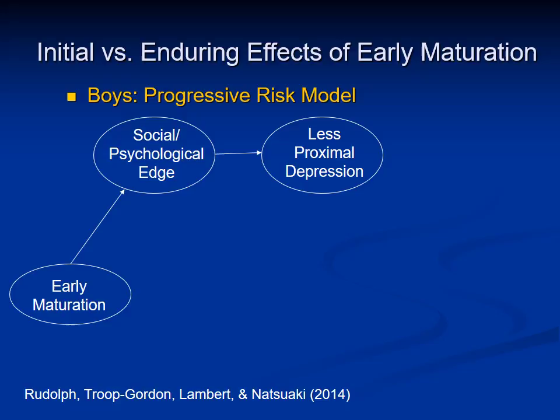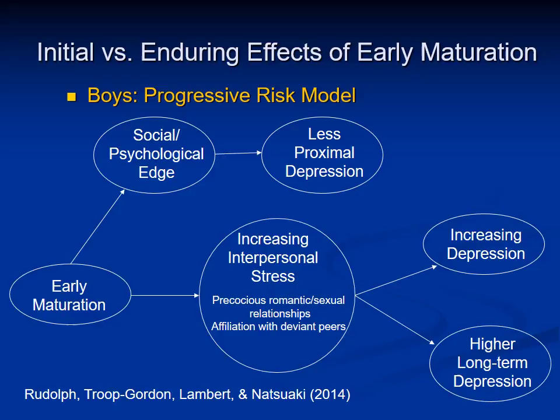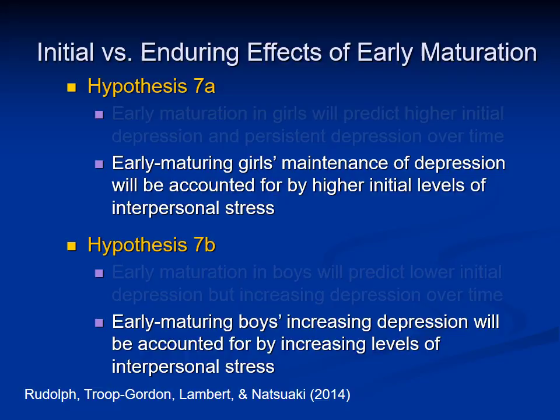In contrast, we thought boys might follow more of a progressive risk model. Early maturation in boys may provide an initial edge — they develop desirable characteristics which might give them more confidence and social stature — but the risk might accumulate over time. Early maturing boys also begin to affiliate with deviant peers and engage in more precocious romantic and sexual relationships. These experiences might create more stress in their relationships, and boys might suffer longer-term consequences associated with affiliating with risky peers. So we predicted that early maturing girls' maintenance of depression would be accounted for by higher initial levels of interpersonal stress, and early maturing boys' increasing depression would be accounted for by increasing levels of interpersonal stress over time.